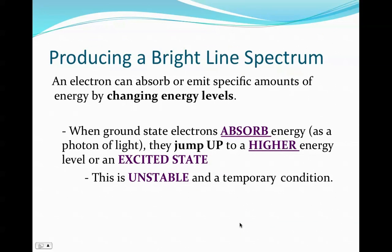So how are these bright-line spectrums produced? Well, electrons can absorb or emit specific amounts of energy by changing energy levels. When a ground state electron absorbs energy, which is considered a photon of light, they jump up to a higher energy level or to the excited state. Now this is unstable and it's a temporary condition.